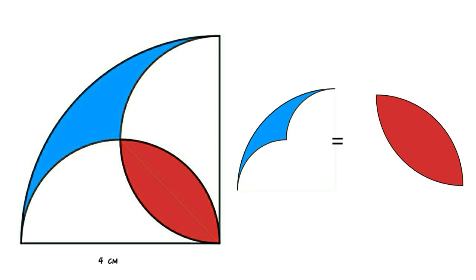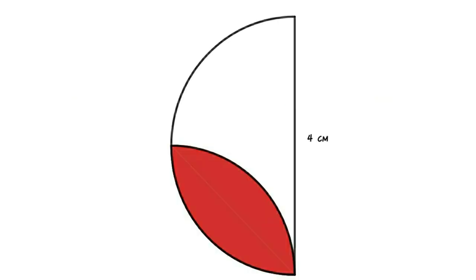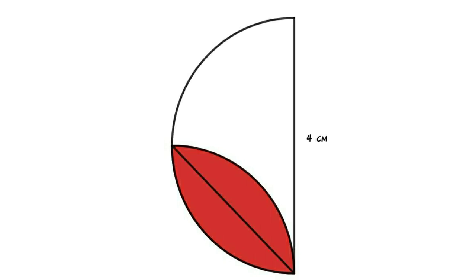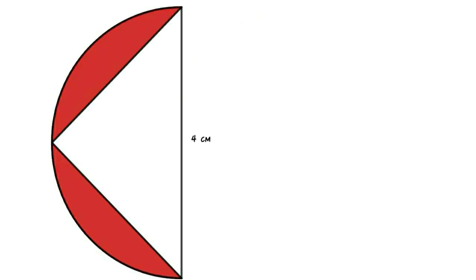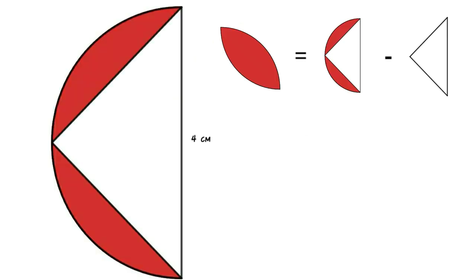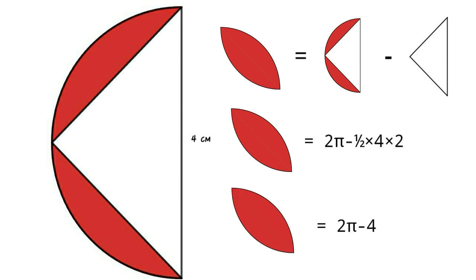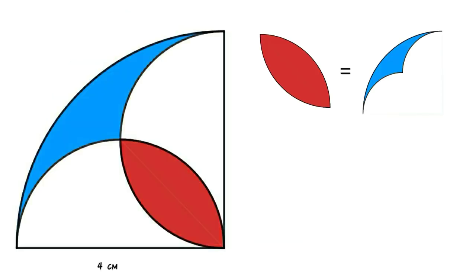Consider the semicircle: we can divide the lens into two equal segments, and the upper segment can be moved. So area of the lens equals area of semicircle minus area of triangle, which equals 2π − (1/2)(4)(2) = 2π − 4. Since area of red lens equals area of blue shape, area of blue shape equals 2π − 4 cm².